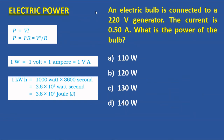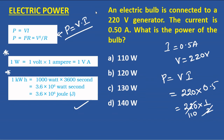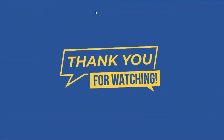Electric power: the relation between power, voltage, and current is P = V × I. This is very important — memorize these formulas. In this problem, voltage is 220 volts and current is 0.5 amperes. So P = 220 × 0.5 = 110 watts. The unit for power is watts. That is option A.